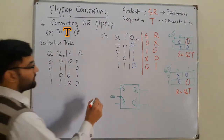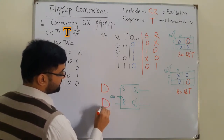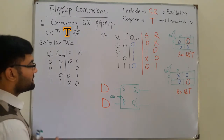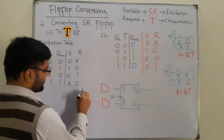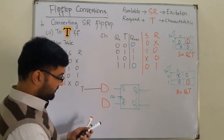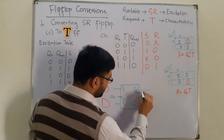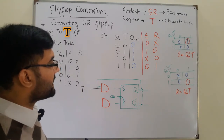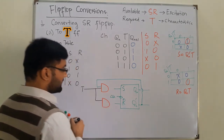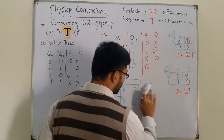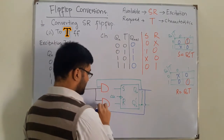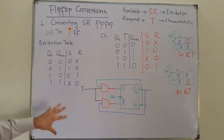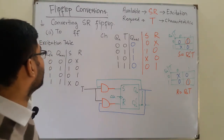We require two AND gates with the SR flip-flop for this conversion. S = Qn_complement AND T: the T input goes into one AND gate along with Qn complement — shown in green. R = Qn AND T: T comes from the input, Qn is shown in blue and fed into the second AND gate. The outputs of these two AND gates are given as the inputs S and R to the SR flip-flop. This circuitry now works as a T flip-flop.